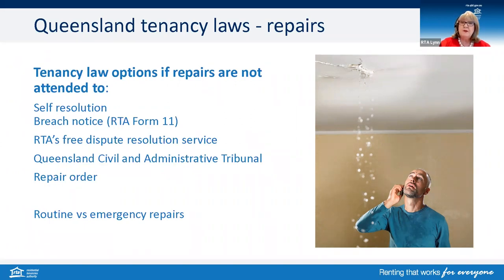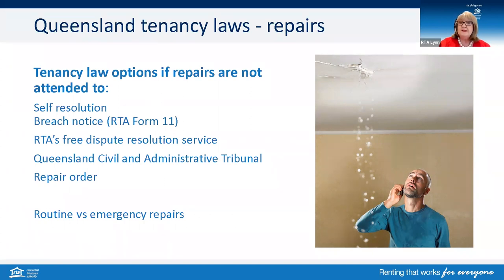Tenants can also issue an RTA Form 11 breach notice. The RTA does recommend self-resolution in the first instance — really good communication between owners, managers and tenants to resolve issues. The RTA has self-resolution tips available on our website. If it's not successful, you can apply to the RTA's free dispute resolution service, where impartial conciliators will help parties try to resolve the matter. If that's unsuccessful, an application can be made to QCAT and potentially a repair order.